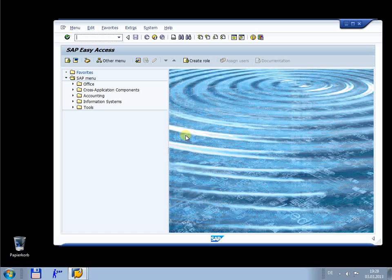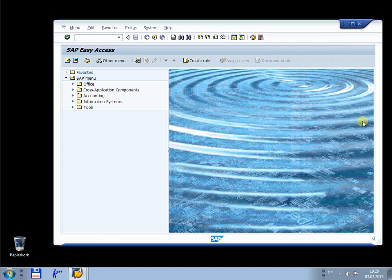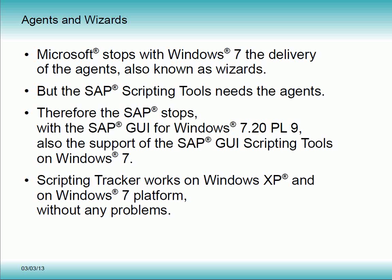Now we look at the Local Layout menu on an SAP GUI on Windows 7. We don't find the menu item Script Development Tools — you have no chance to identify any scripting object here. Microsoft stopped with Windows 7 the delivery of the agents, also known as wizards, and the SAP scripting tools need the agents. Therefore SAP also stopped, with SAP GUI for Windows 7.20 patch level 9, the support of the SAP GUI scripting tools on Windows 7. Scripting Tracker works on Windows XP and on Windows 7 without any problems.